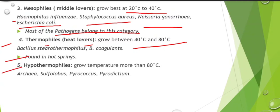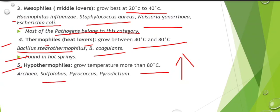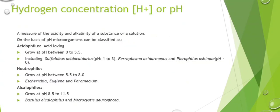Hot springs are examples of thermophile habitats. Then hyperthermophiles — these are found in extreme environments such as wood samples and archaea-dominated habitats. Examples include Sulfolobus, Pyrococcus, and Pyrodictium.